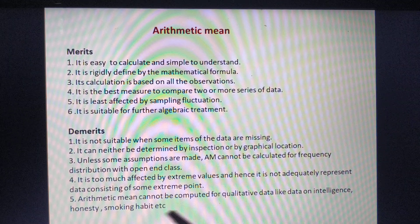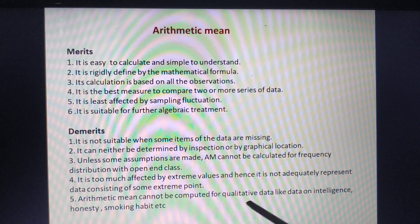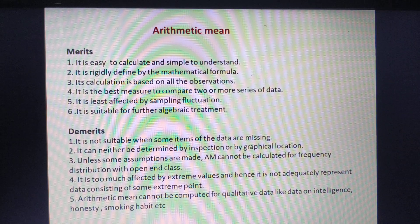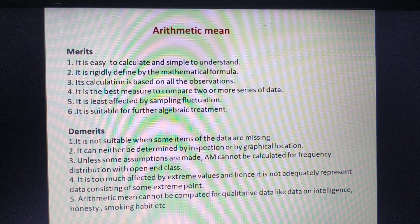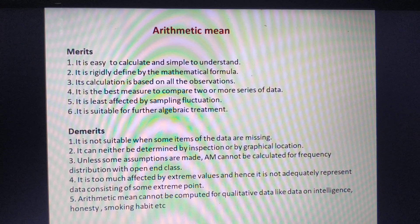The fifth demerit is that arithmetic mean cannot be computed for qualitative data — such as data on intelligence, honesty, or smoking habits. These are qualitative forms of data, so we cannot apply arithmetic mean to them.